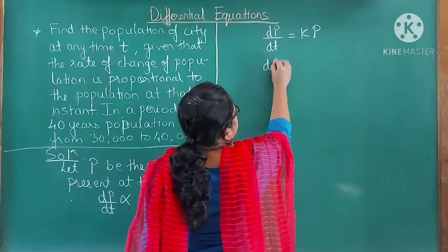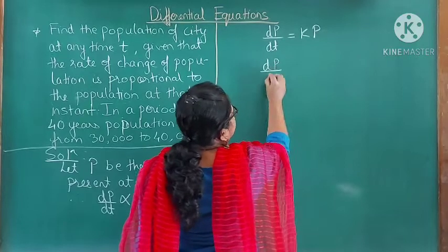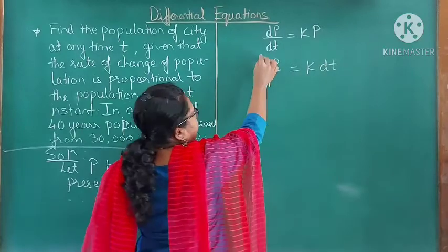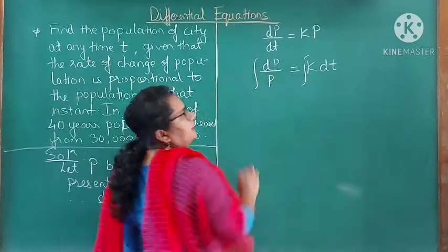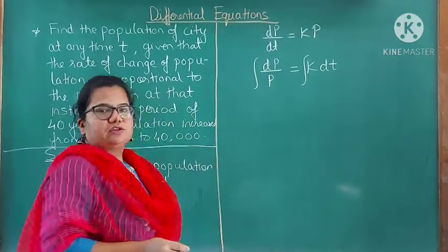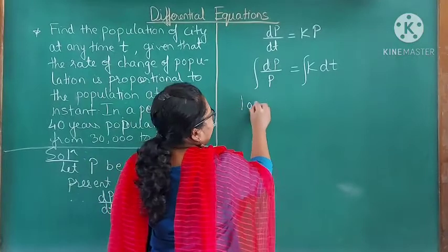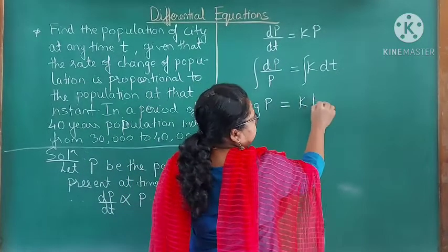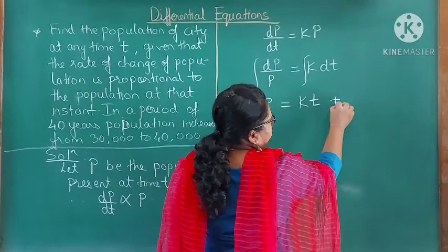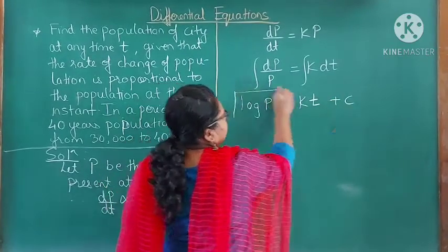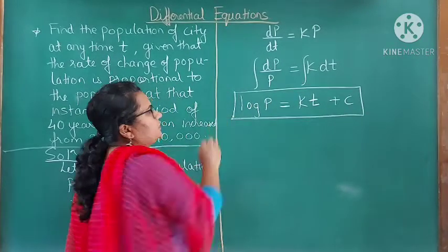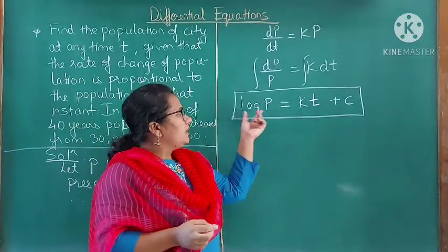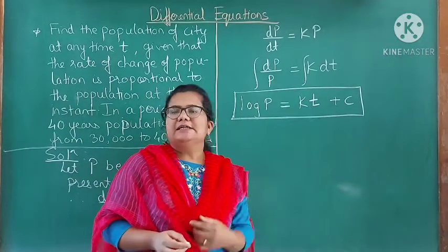We will do the variable separation: dP/P = k·dt. After this, we integrate on both sides. This gives log P = kt + C, where C is the constant of integration. So here you get your first expression: log P = kt + C.